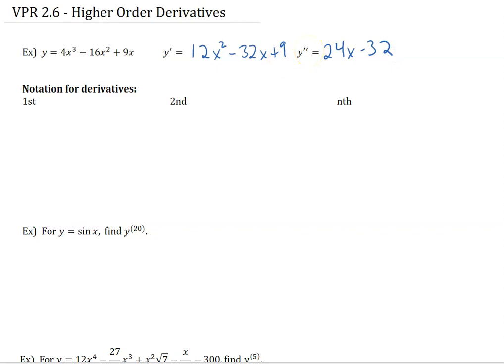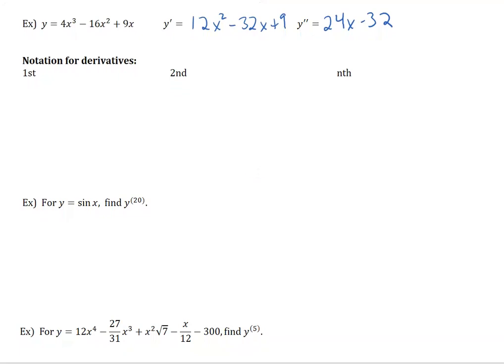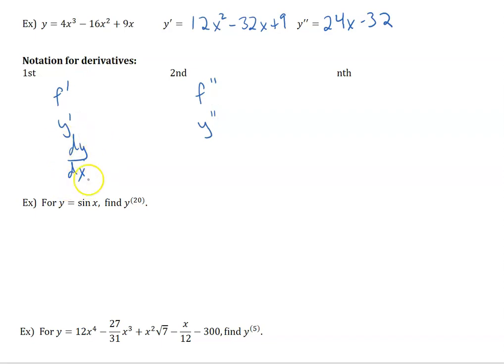So just some notations for derivatives. We've already looked at a few things for first derivatives: f prime of x, or y prime, or dy over dx — all of these mean the derivative with respect to x. And then the second derivative would be the derivative of these, so the derivative of f prime we would write as f double prime.